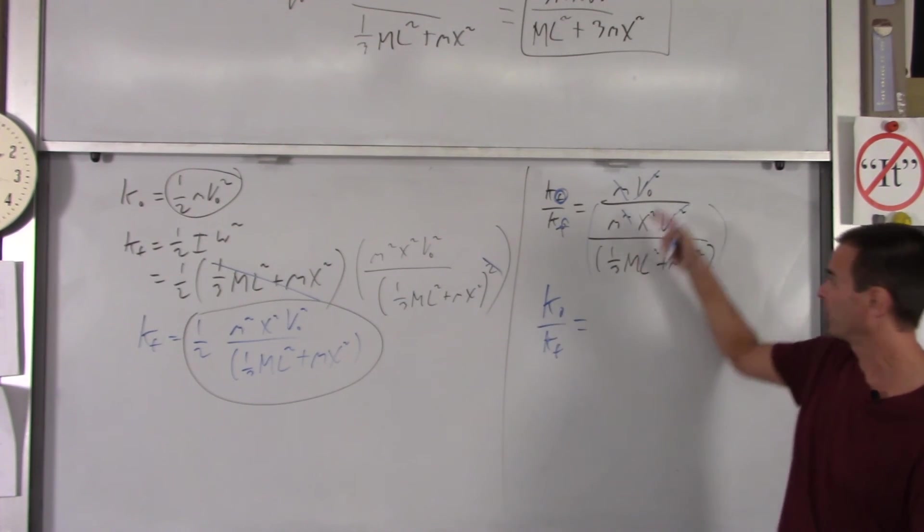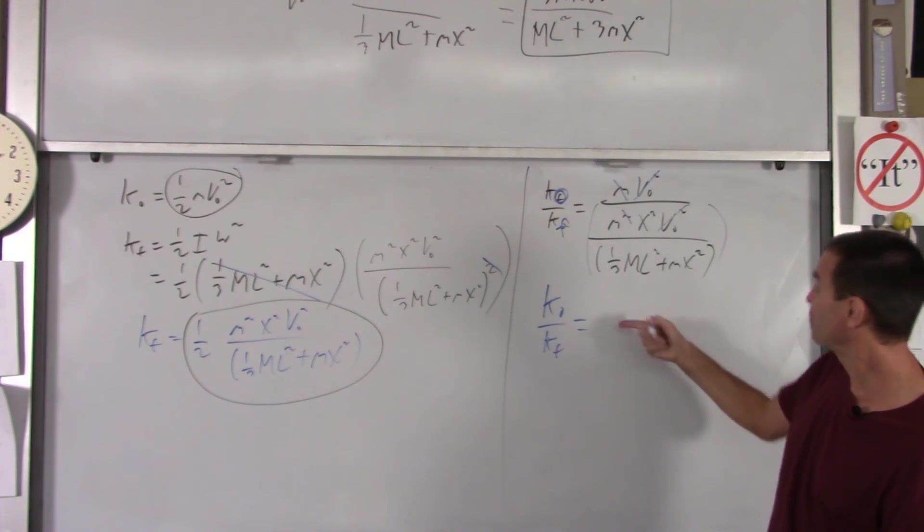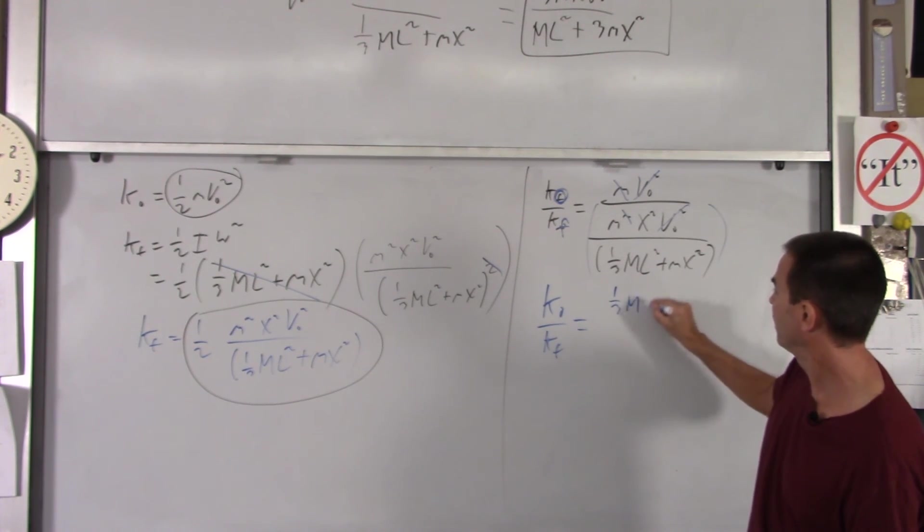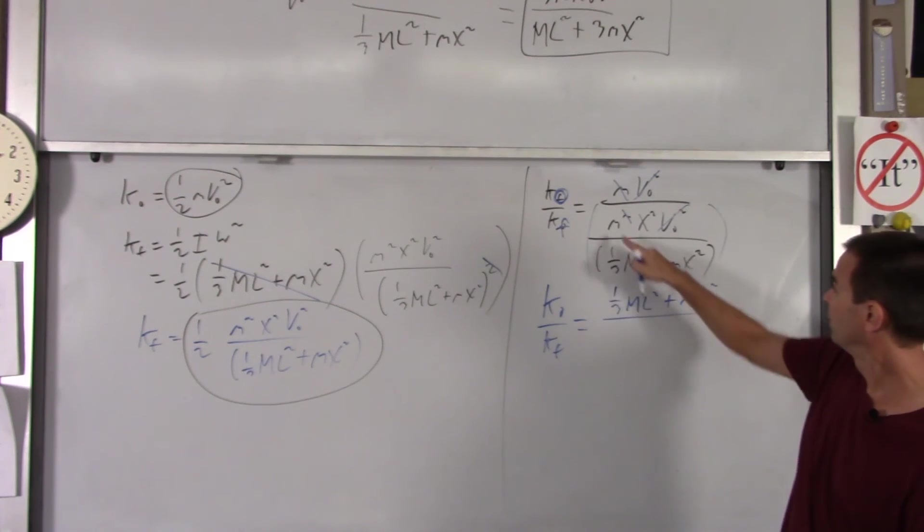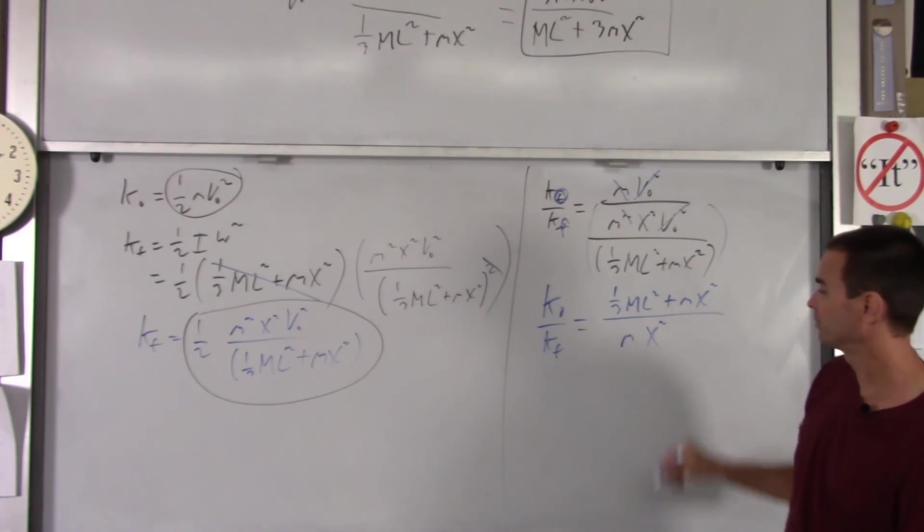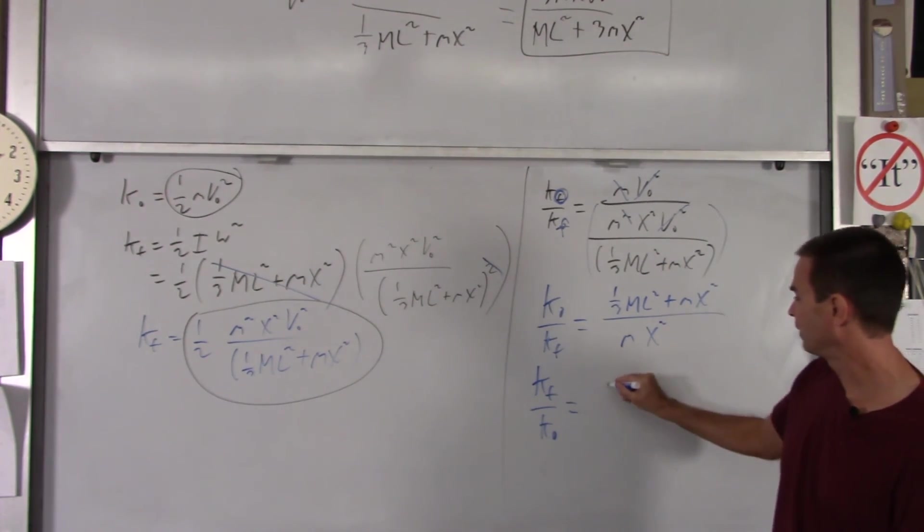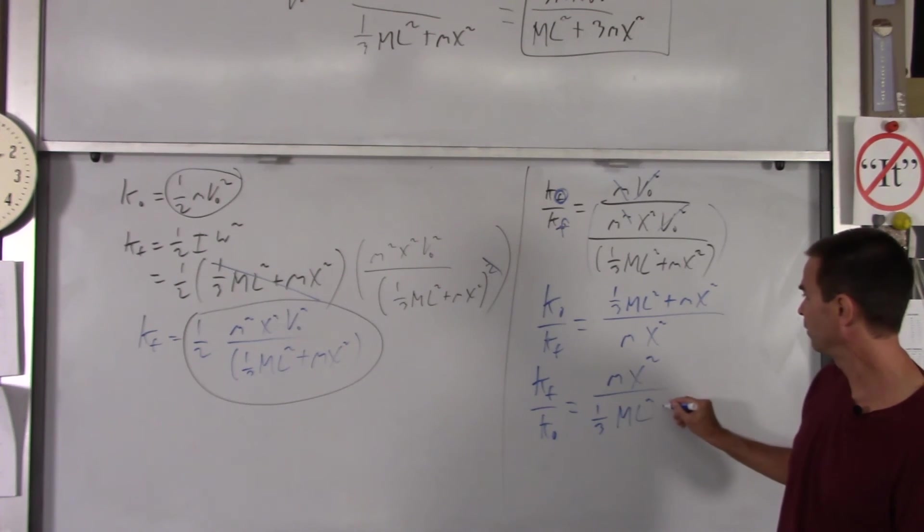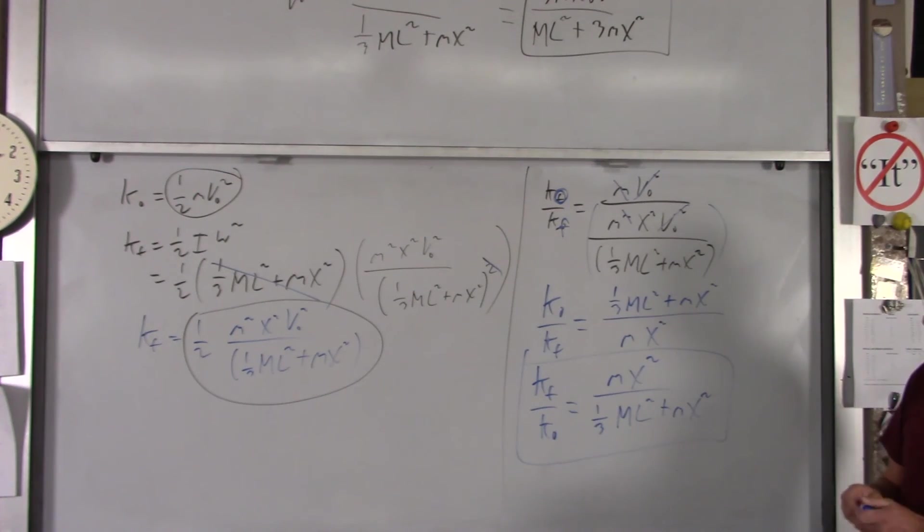That was the 1/2 m V0 squared. So it's k-naught over k-final. So if you do that, you get the following. This now goes to the top. You get 1/3 ML squared plus m x squared over this, little m x squared. If we flip that over, you get little m x squared over 1/3 ML squared plus little m x squared. So that's your expression for the final kinetic energy over the initial.